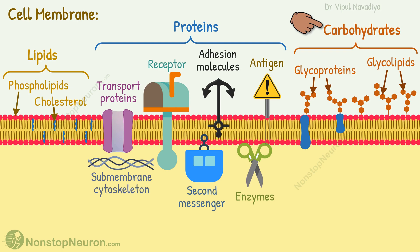And we also have carbohydrates making the outer coat called glycocalyx. The carbohydrates give the cell surface a negative charge, help one cell to attach to the other, serve as receptors, and participate in immune functions.